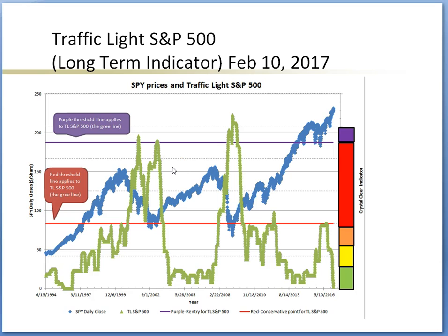Traffic Light S&P 500 is showing less long-term risk because the light has been descending to the green at the bottom level. It is still required, however — in the 2000 period, it took several tries for the green line to breach the red line successfully. The traffic light Dow and traffic light NASDAQ should also reveal whether the crossing of the red line here is genuine. I will detail that in a later slide.